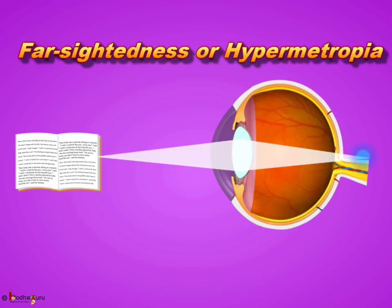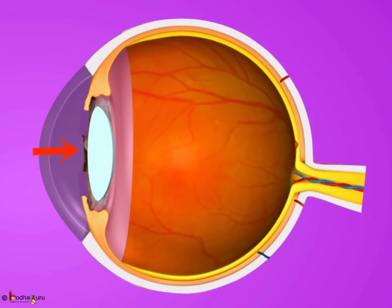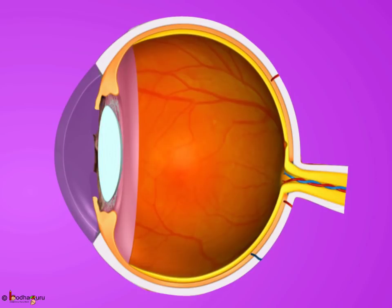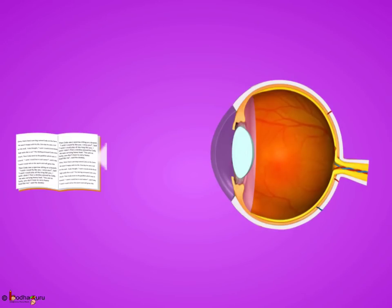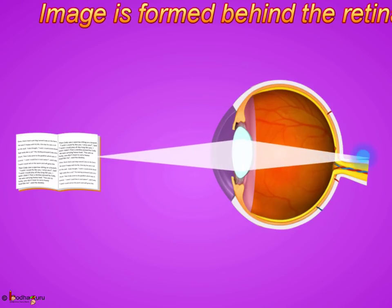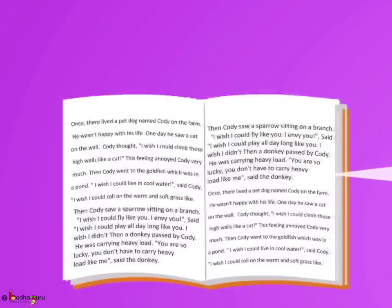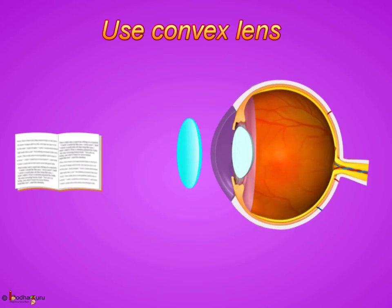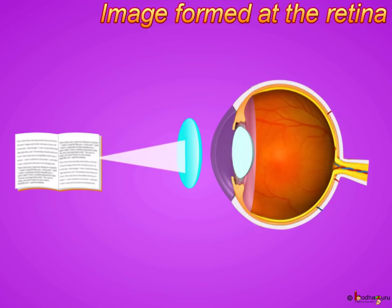This defect arises either because the focal length of the eye lens is too long or the eyeball has become too small. In farsightedness, the image is formed behind the retina instead of on the retina. The error can be corrected using a convex lens, with the final image formed at the retina.